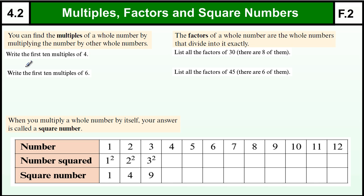Multiples are found by multiplying a number by another whole number. The first 10 multiples of 4 are 4 times 1, which is 4; 4 times 2, which is 8; 4 times 3, which is 12; 4 times 4, which is 16, and then just going up on the 4 times table all the way up to 40, which is the 10th one.